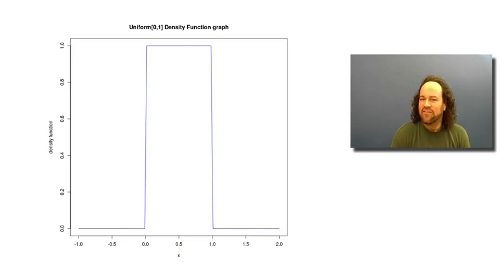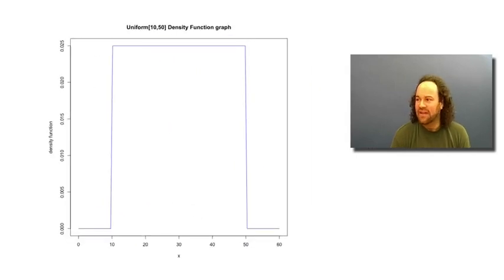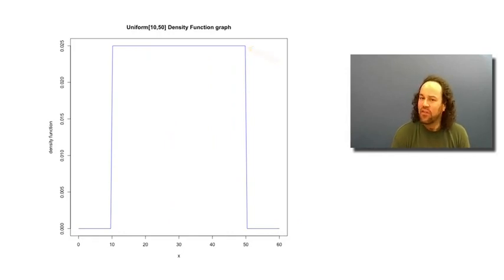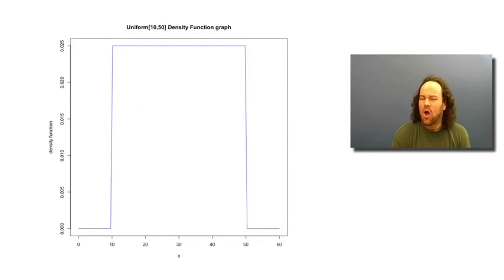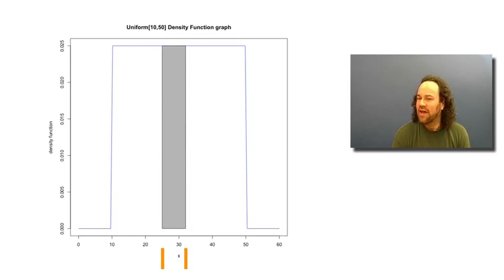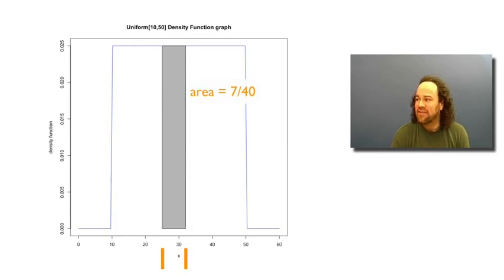For example, instead of uniform between 0 and 1, we could have a random variable uniform between 10 and 50. It would have a density equal to 1/40 for all numbers between 10 and 50, and 0 otherwise. The total area under the graph is still 1. The probability that the random variable is between 25 and 32, for instance, would be the area under the graph between those points, which equals 7/40.